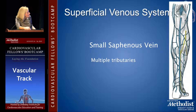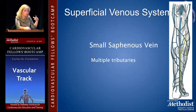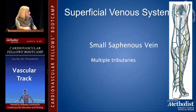The small saphenous vein extends up to join the popliteal vein, usually within eight centimeters of the knee. It can join below the knee joint, but it's usually above it — though it's very variable. Most of the time it's within eight centimeters of that knee joint.